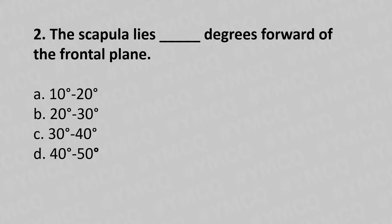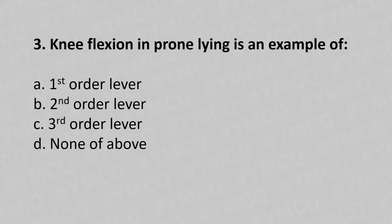Second question: the scapula lies how many degrees forward of the frontal plane? Option A: 10 to 20 degrees, option B: 20 to 30 degrees, option C: 30 to 40 degrees, option D: 40 to 50 degrees. The answer is option B: 20 to 30 degrees.